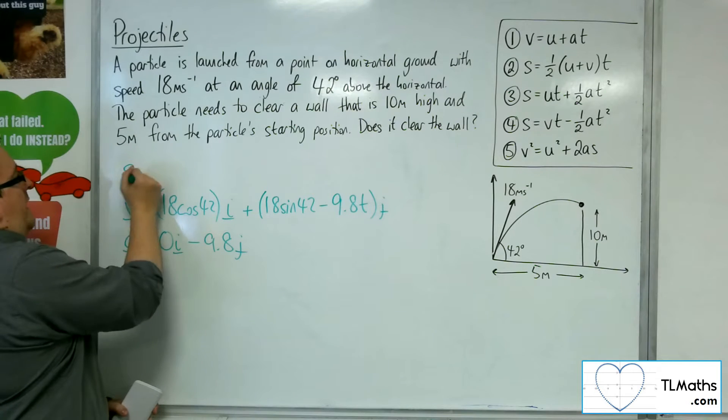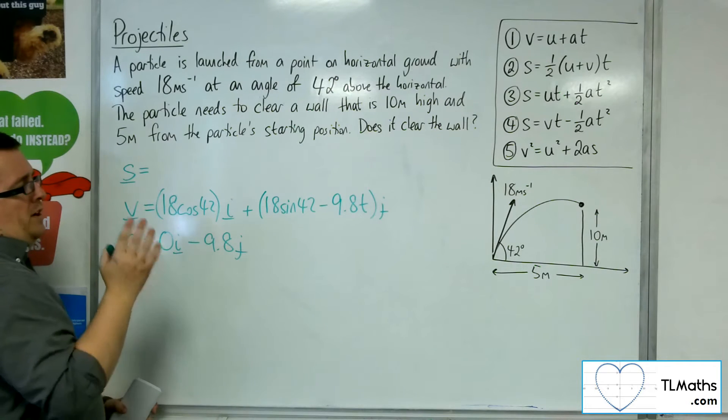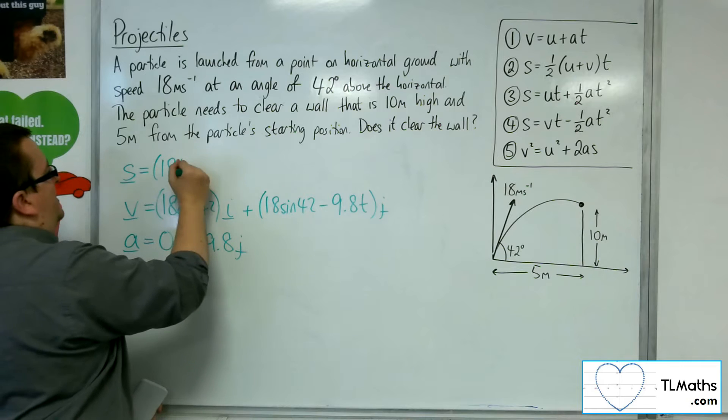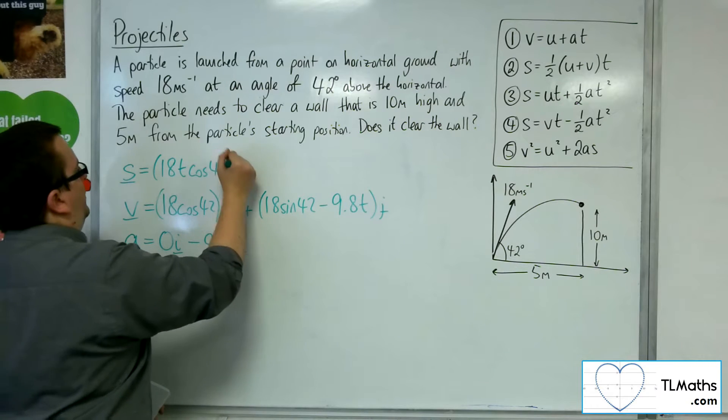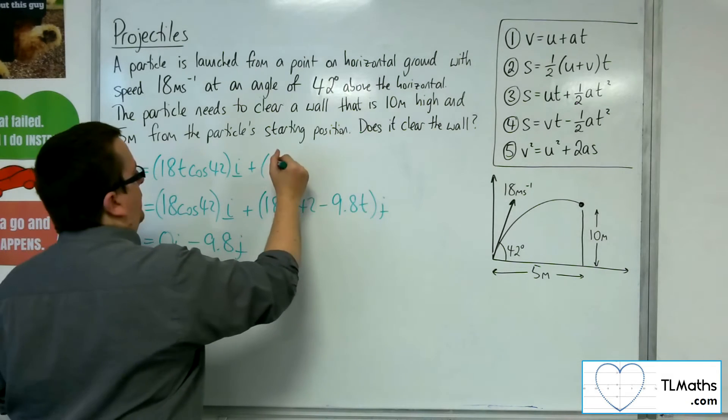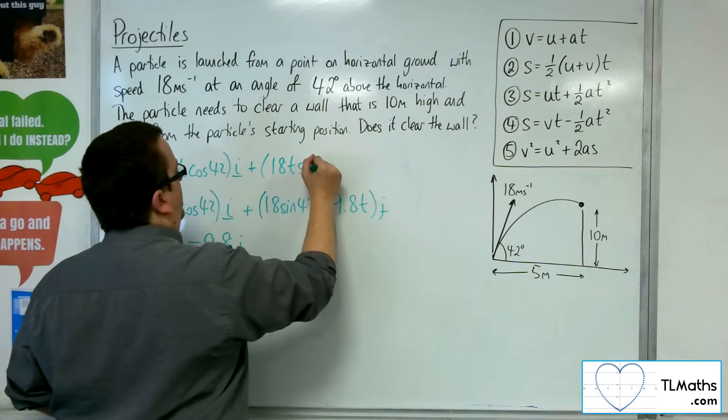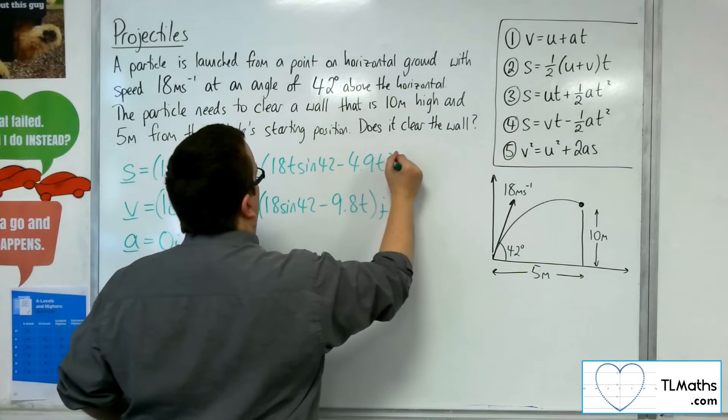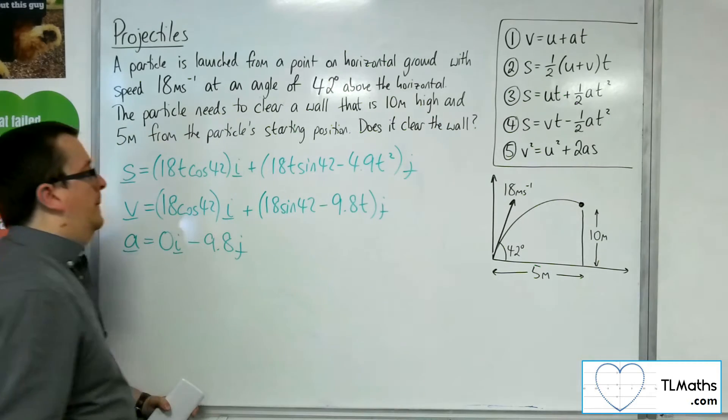Then I integrate again. The initial starting point is 0, 0, so I'm just going to get 18t cosine 42i plus 18t sine 42 minus 4.9t squared, j.